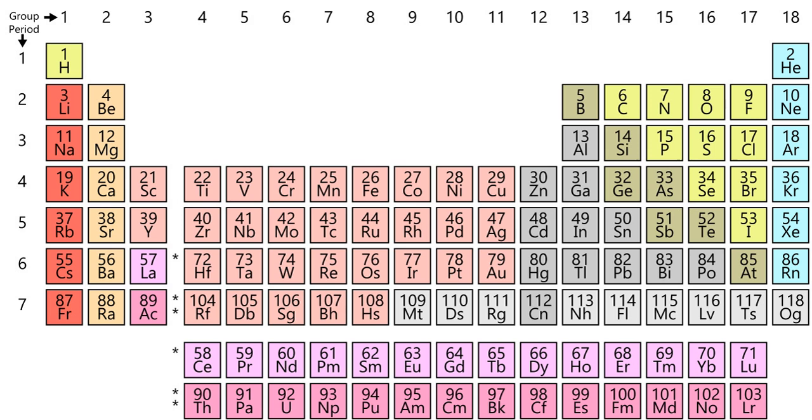While about 32 of the chemical elements occur on Earth in native uncombined forms, most of these occur as mixtures. For example, atmospheric air is primarily a mixture of nitrogen, oxygen, and argon, and native solid elements occur in alloys, such as that of iron and nickel.